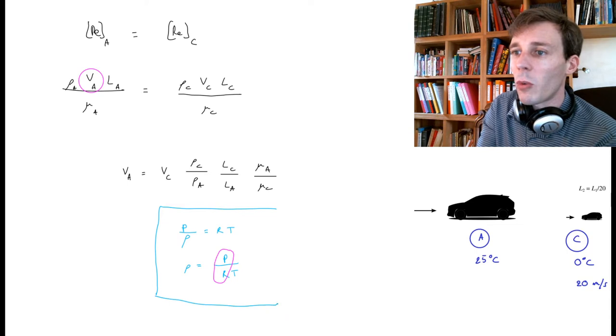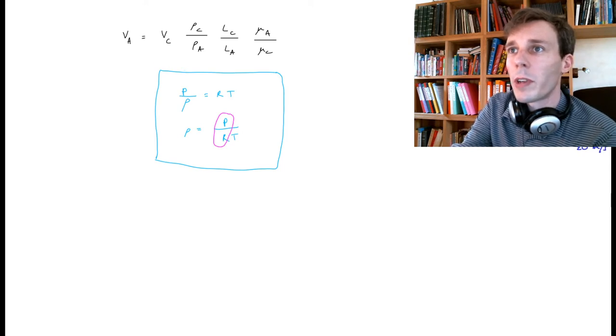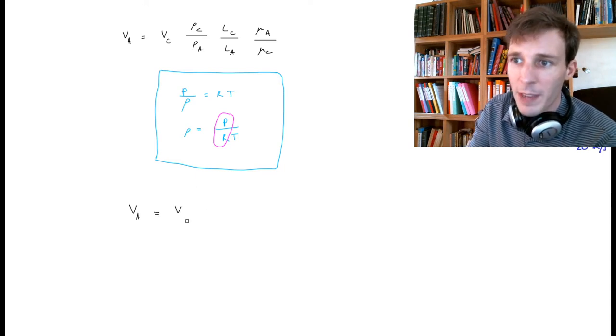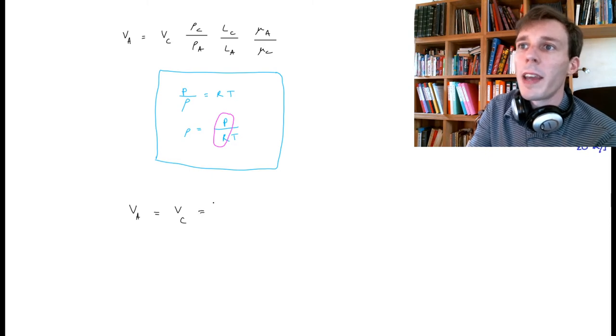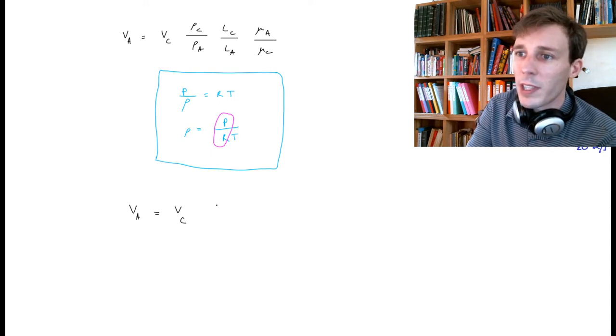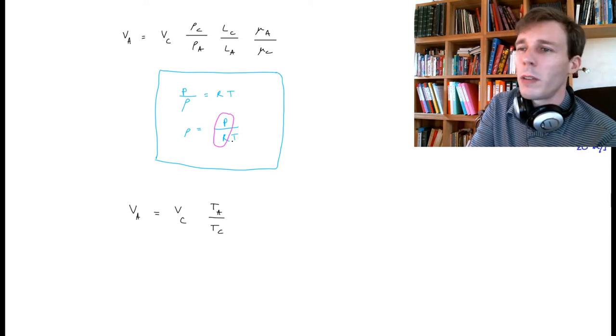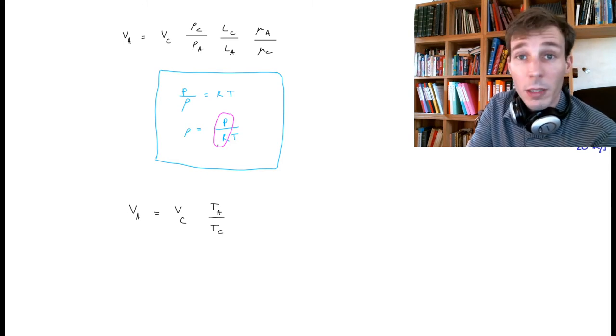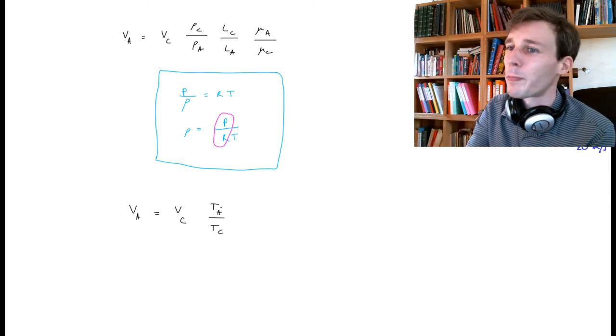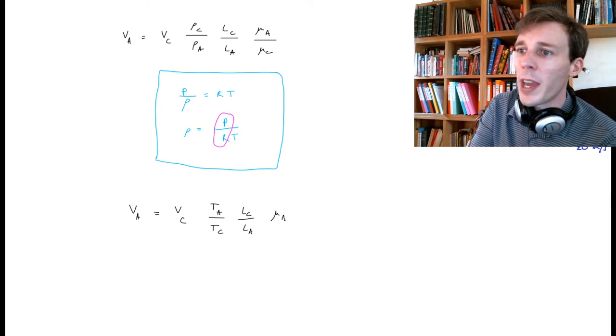Let's close this bracket and move down into the page to continue our exploration. We have V_A is V_C multiplied by the ratios of densities, which become the inverse of the ratios of temperatures. So we have T_A divided by T_C. I don't need to know the pressure or the gas constant for air, because those parameters appear on both sides, on both top and bottom of the fraction. Then we have L_C over L_A, and then μ_A over μ_C.